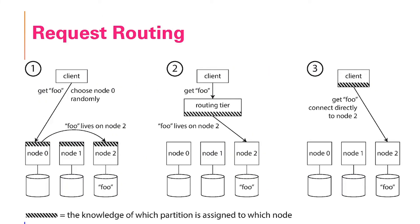Request routing. The knowledge of which partition is assigned to which node is required for request routing. We discuss three different cases. The first case, the knowledge is in each of the nodes and therefore we choose a node. Say if we choose the node 0 randomly and the node 0 routes it to the appropriate node.